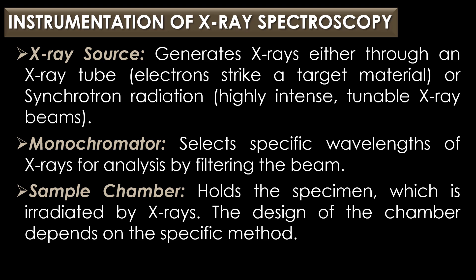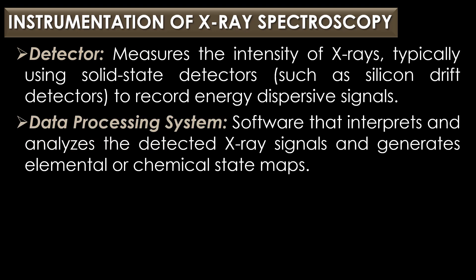The third part is the sample chamber, which holds the specimen that is irradiated by X-rays. The design of the chamber depends on the specific method. The fourth part is the detector, which measures the intensity of X-rays, typically using solid-state detectors such as silicon drift detectors to record energy dispersive signals.